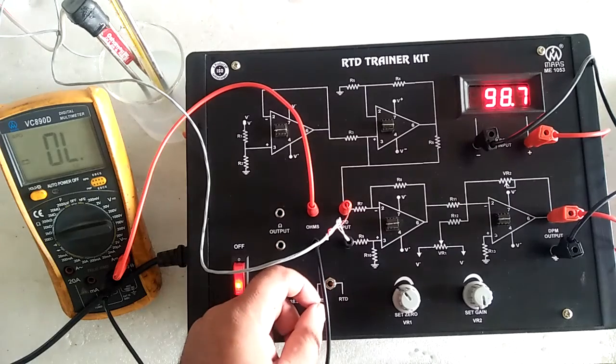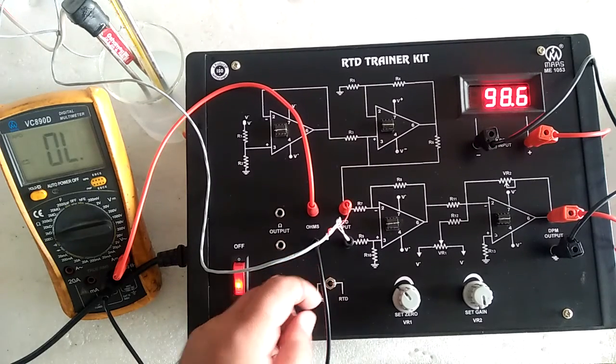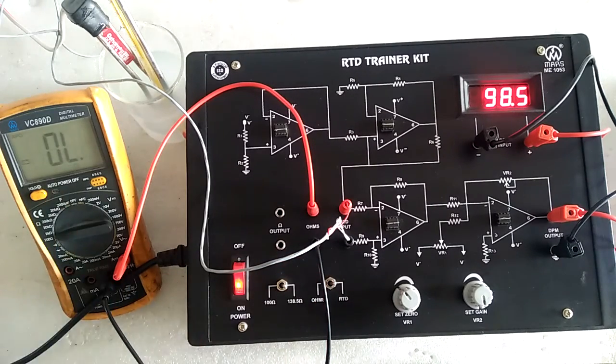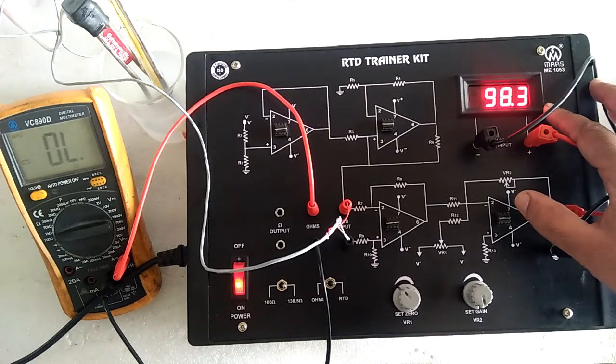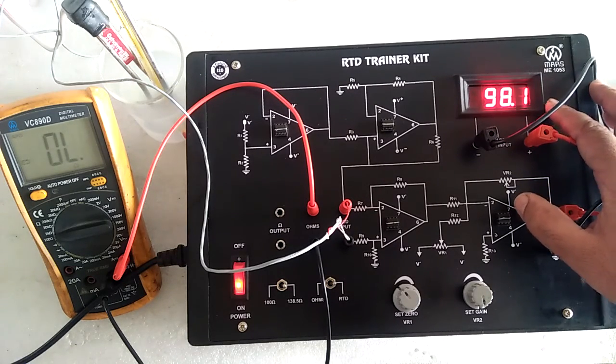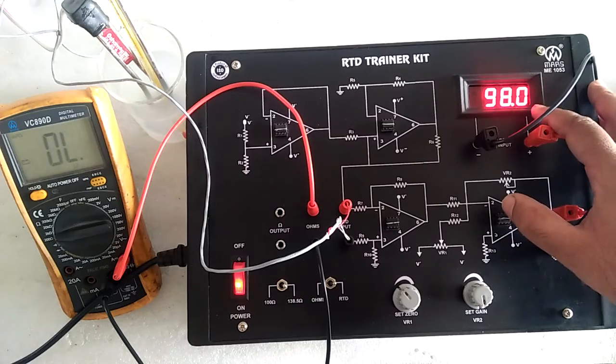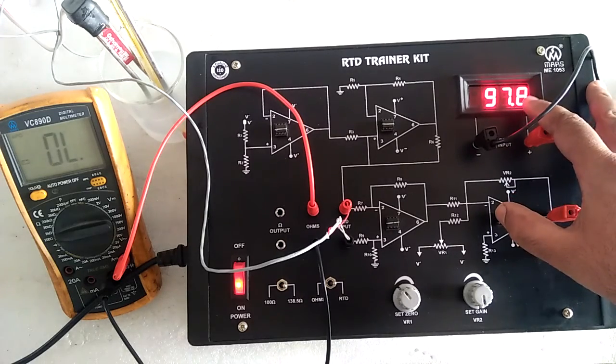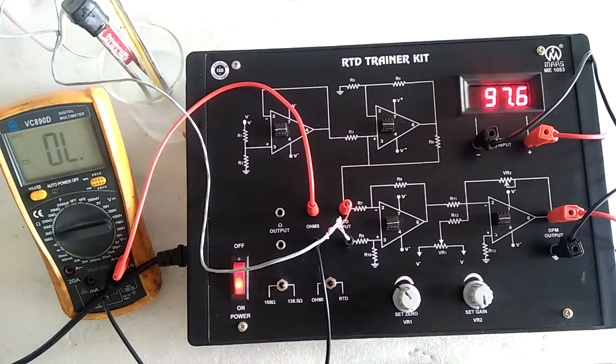Now we will take the ohms reading with equal steps of temperature. Suppose 80, then 90, then 80, then 70, 60, and make the table accordingly.